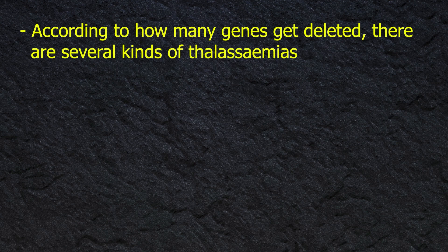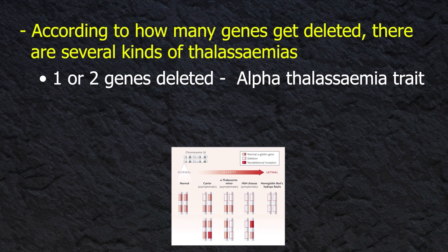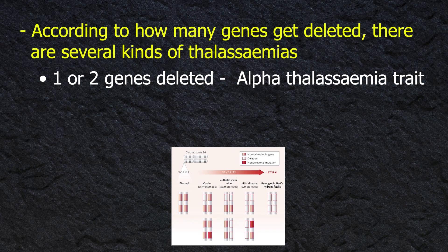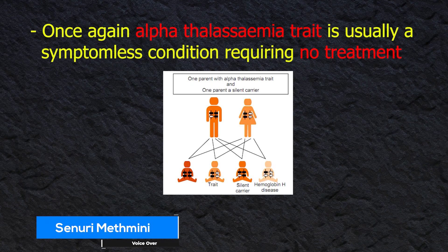According to how many genes are deleted, there are several kinds of alpha thalassemia: one gene deleted is a silent carrier; two genes deleted is alpha thalassemia trait; three genes deleted causes hemoglobin H disease; and all four genes deleted results in hydrops fetalis.